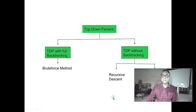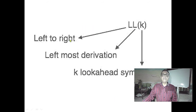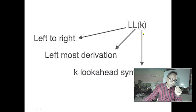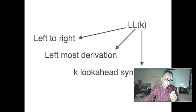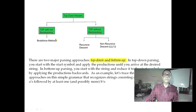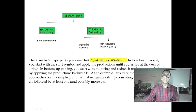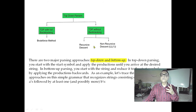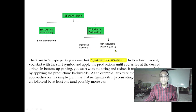We try to avoid backtracking. Then there is recursive descent parsing — also time-consuming because it calls functions again and again using the system stack. Non-recursive descent parsing is preferred. So we prefer top-down with non-recursive descent — a predictive parser that can determine the correct rule by looking ahead at one symbol.